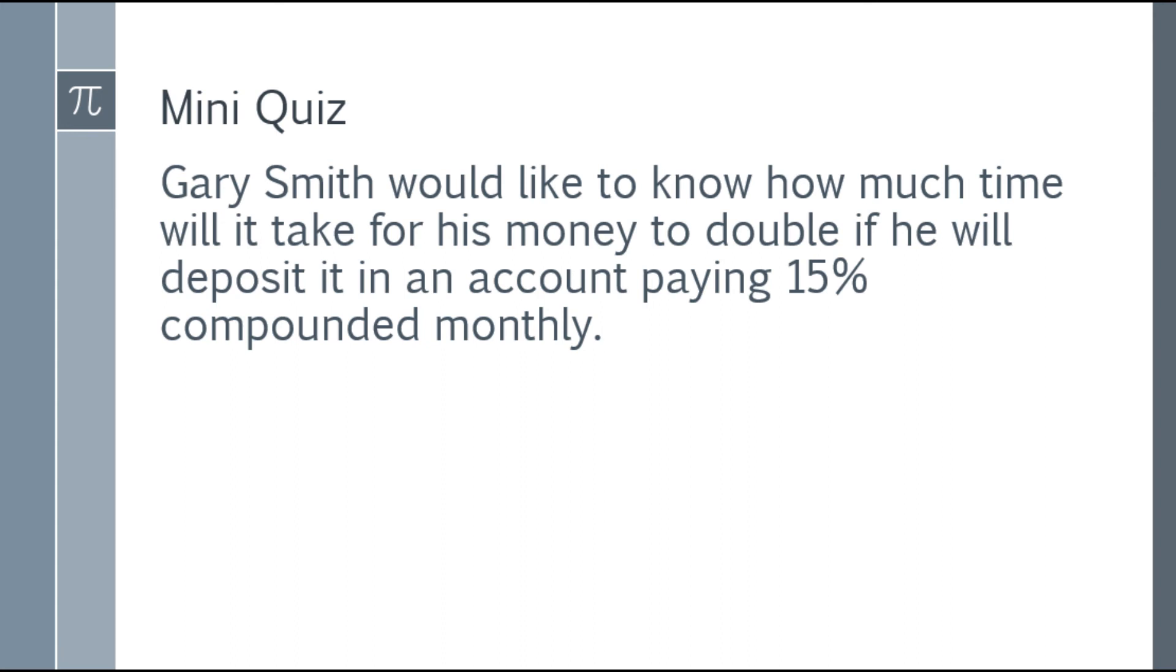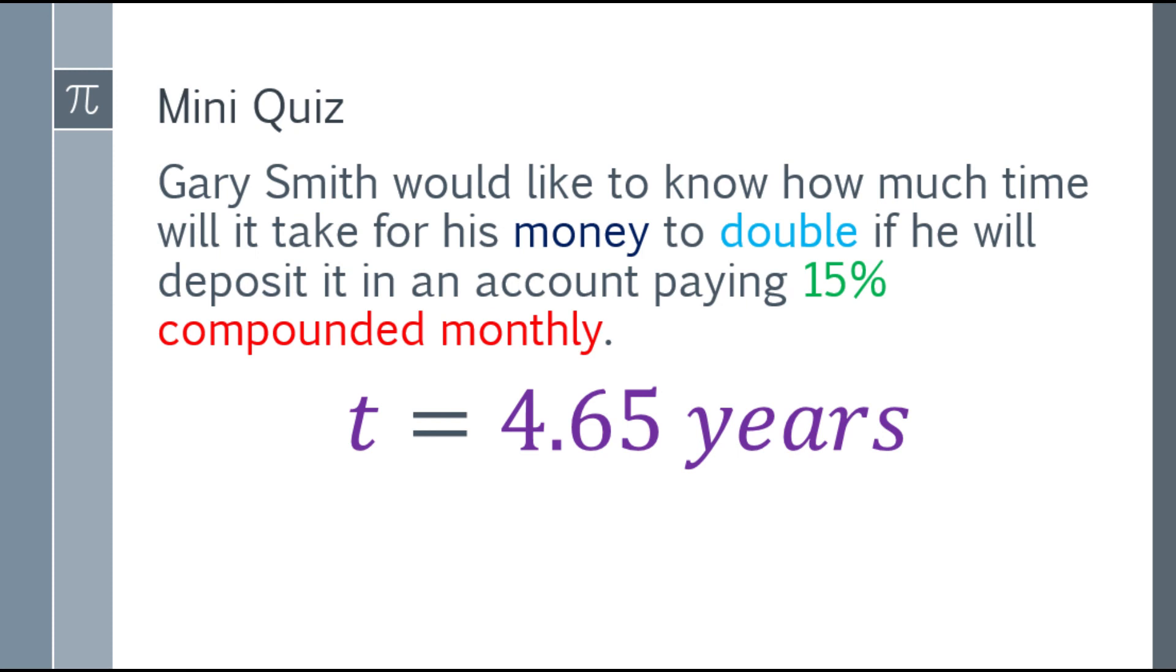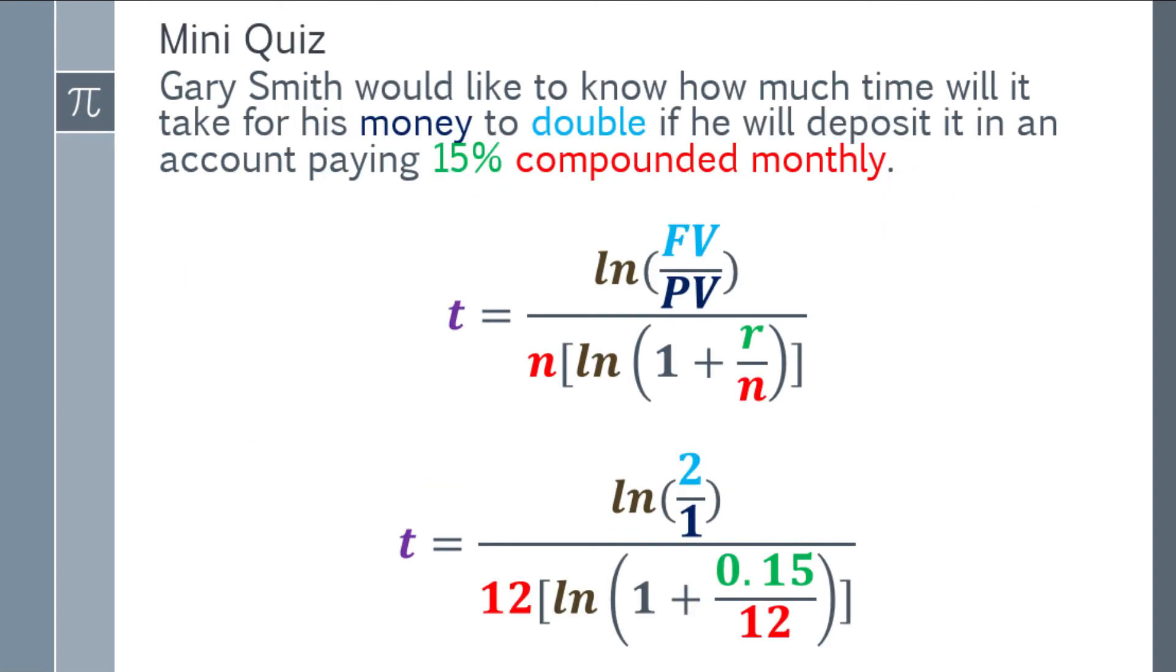Mini quiz—it's your turn. Gary Smith would like to know how much time will it take for his money to double if he will deposit it in an account paying 15% compounded monthly. Gary Smith wants to deposit money and wait for that money to double in a bank paying 15% compounded monthly. How long will he wait for that money to double? I'll give you 5 seconds to answer this one. You may want to pause the video now. After that, I will show you the answer as well as the solution.